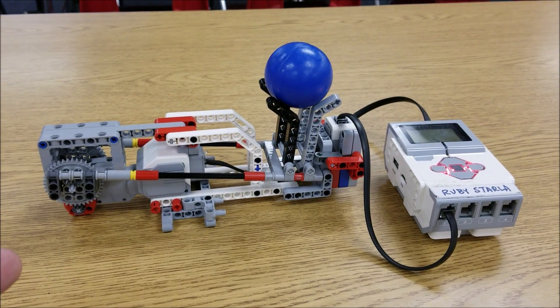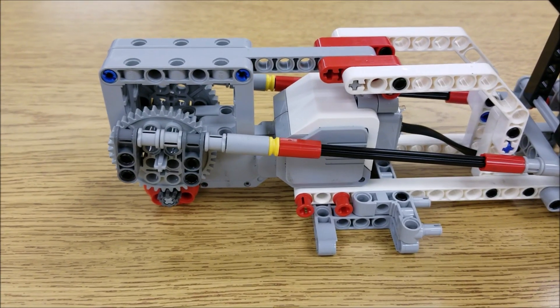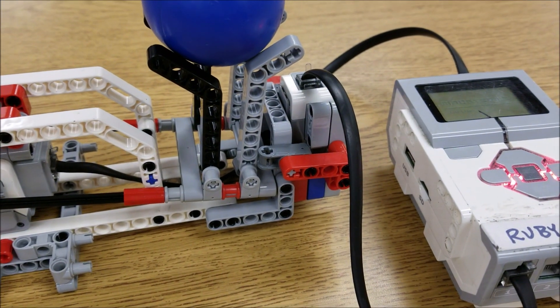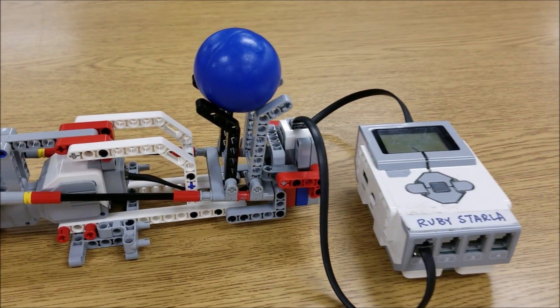Okay, guys, here you go. The EV3 catapult. So it's running off of one large motor and your touch sensor. And that's it. Just two cables. So thank you to Ruby for building this.